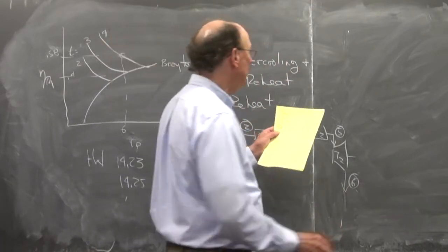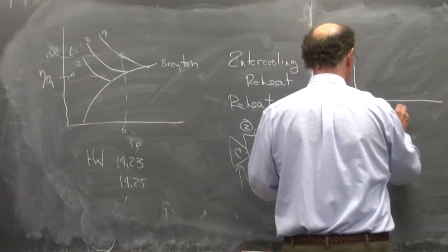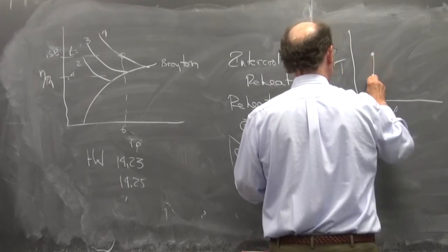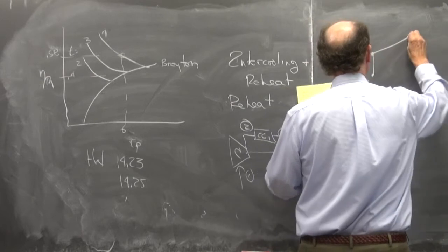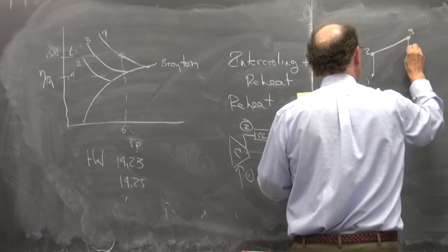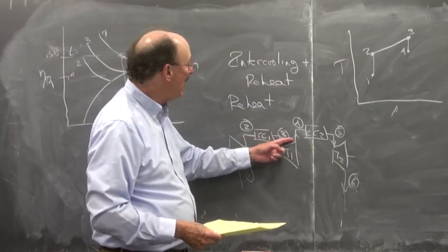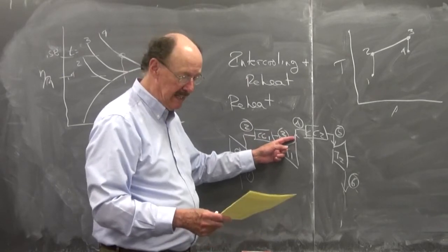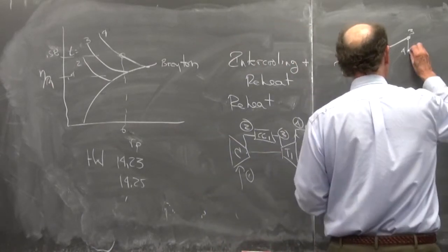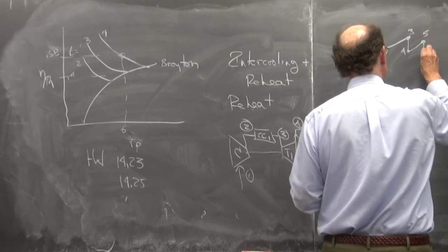And the T-S diagram would look something like this. So we go from one to two, two to three, three to four. So we're expanding, we expand three to four, and now we're going to have reheating. So it's going to go back into a combustion chamber. So from four to five, it's going to go up here. And then it's going to expand five to six.